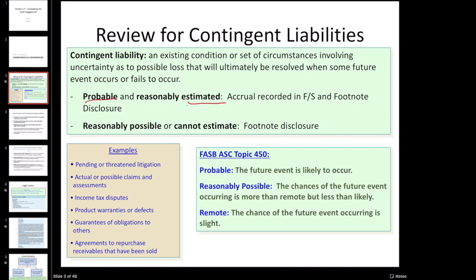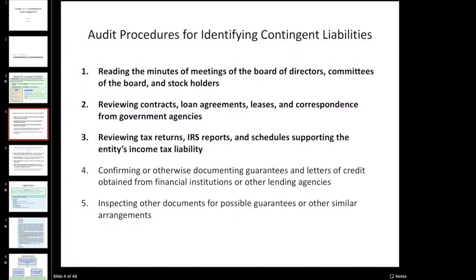So that's the probable and estimable case - I am recording it and disclosing it. If it's at least reasonably possible but non-estimable, it's footnote disclosure only. In terms of our audit procedures, as auditors we're basically concerned that management may try to understate contingent liabilities - they might try to hide possible contingent liabilities from us. Most of our procedures around contingencies are making sure we've found any possible contingencies, so we can ensure the company's disclosures are complete and that they've recorded any that are probable and estimable.